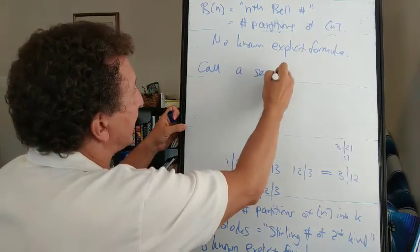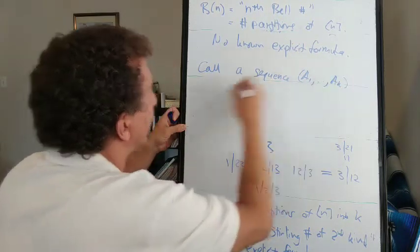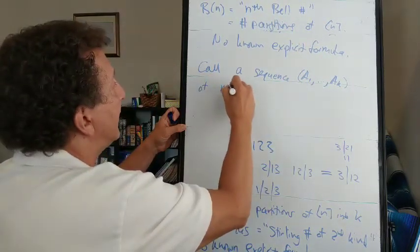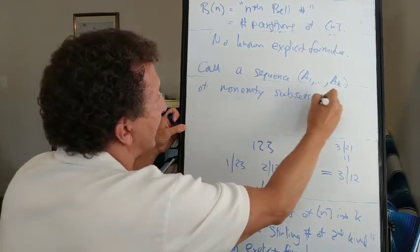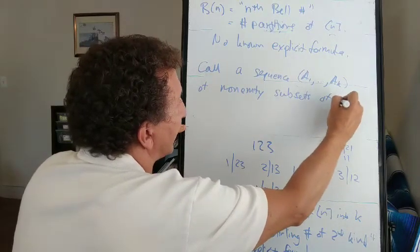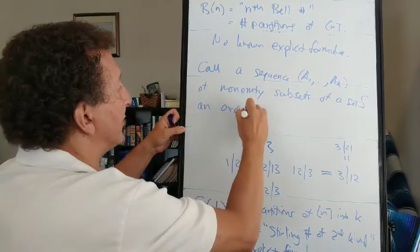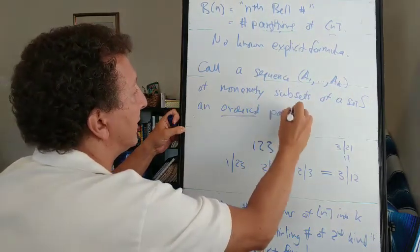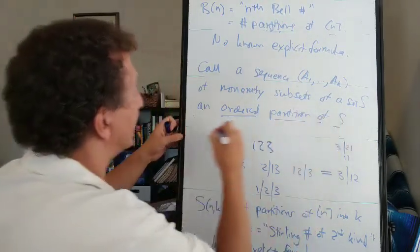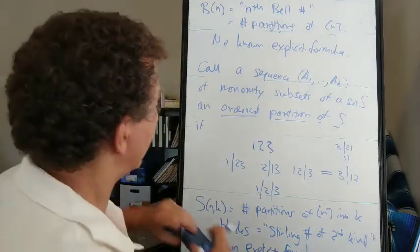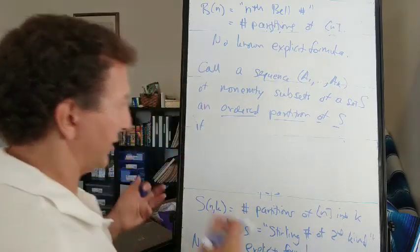So we can call a sequence A1 through AK of non-empty subsets of a set S an ordered partition of S if the union of the sets is S and if they're mutually disjoint.